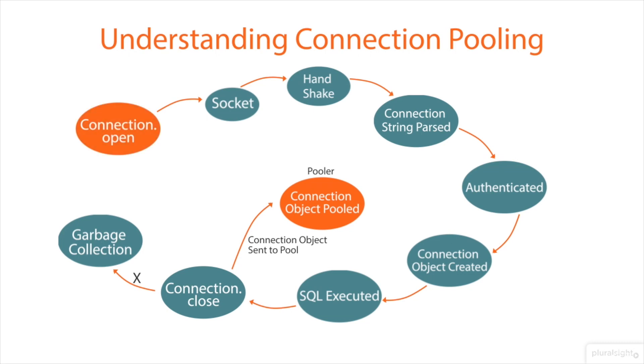Whenever a user calls open a connection, the pooler looks for an available connection in the pool. If a pooled connection is available, it returns it to the caller instead of opening a new connection.